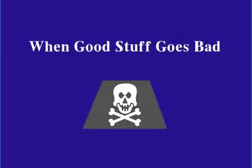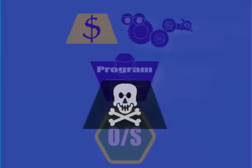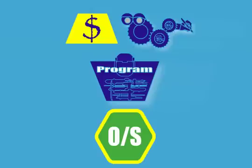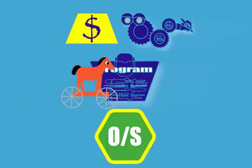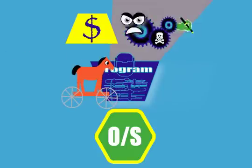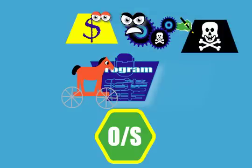When Good Stuff Goes Bad. Not all of the stuff that controls the actions of a process is good stuff. Sometimes what appears to be a good program contains a subversive component called a Trojan Horse. A Trojan Horse can subvert the process to behave in ways not expected by the people who normally use the program. For example, the Trojan Horse could copy secret stuff into the regular stuff accessible to a bad guy.